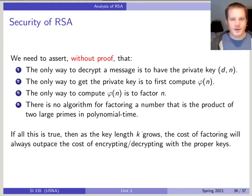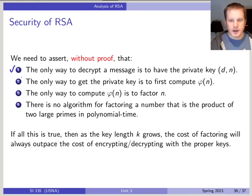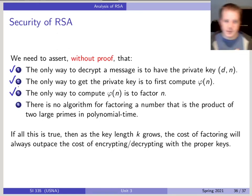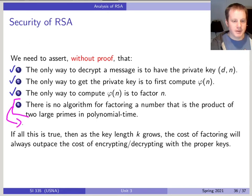The only way to decrypt a message is to have the private key — if the message is sufficiently random, you can prove that. The only way to get that private key is to first compute φ(n) — you can prove that as well. And the only way to compute φ(n) is to have the factorization of n as p times q. When we're talking about security of cryptographic algorithms, we'd like it to depend on just one hard problem. In the case of RSA, this is the hard problem: large integer factorization.